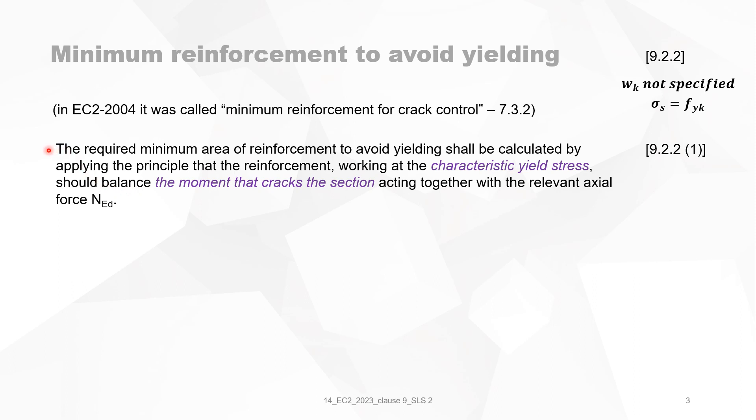In clause 9.2.2, part 1, it states that the required minimum area of reinforcement to avoid yielding shall be calculated by applying the principle that reinforcement working at characteristic yield stress should balance the moment that cracks the section acting together with the relevant axial force N_ED. So, it's important to see characteristic yield stress and then that the moment that cracks the section, that's where the reinforcement should be calculated for.